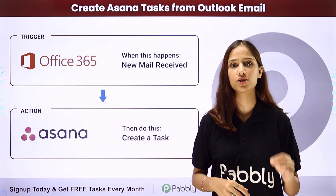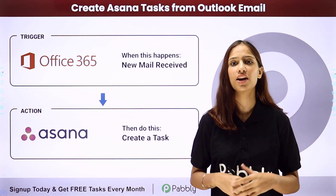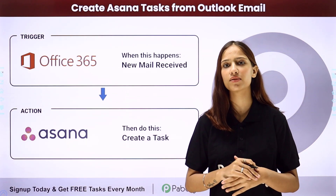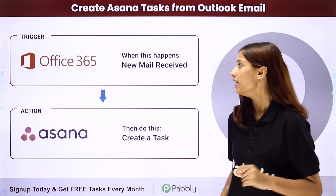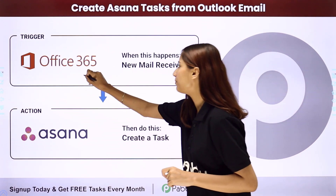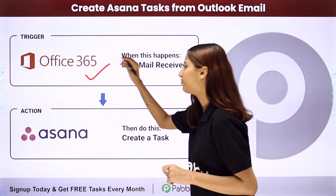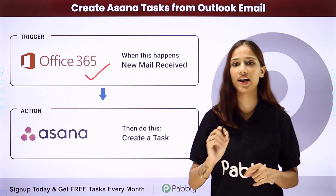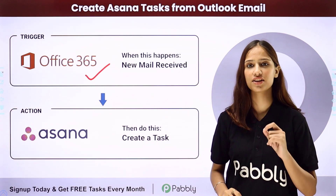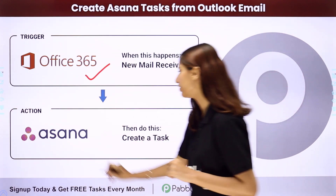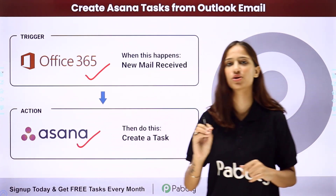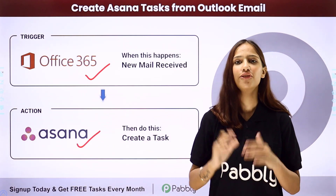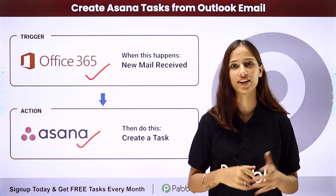To perform this automation, we will be using Pabbly Connect, where our trigger application will be Office 365 and our action application will be Asana. So to perform this automation, follow me through the screen.